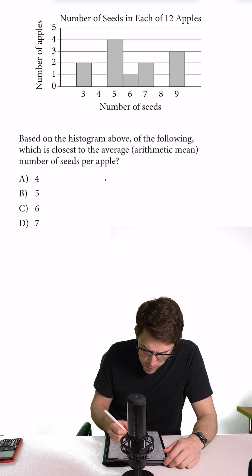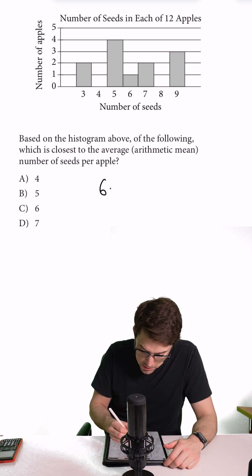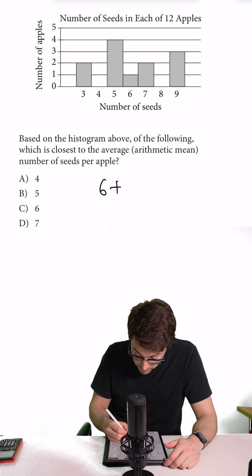All right, so if we have three seeds and two apples, that's going to give us six total seeds. Four is going to be zero. That's unfortunate.